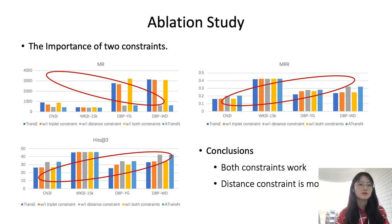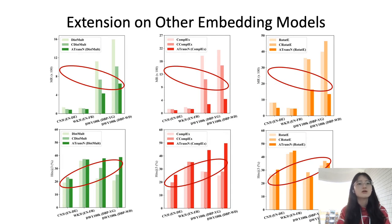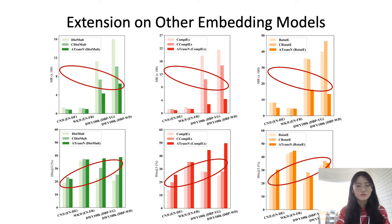For the baseline TransE, we add the triplet constraint (denoted as orange), or the distance constraint (denoted as gray), or both constraints (denoted as yellow), or our full framework. We conclude that both constraints work, and the distance constraint is more general on most datasets. We also conduct extension experiments on other embedding models, replacing TransE with DistMult, ComplEx, or RotatE. The experiment results on MR and H@3 metrics all prove that the framework can be extended to other shallow models well.